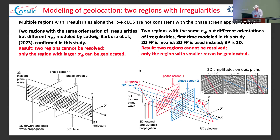Grayscale plots show amplitude distribution on the observational plane. We can see that if we have only the first or only the second phase screen, the distributions are one-dimensional, but after propagation through both screens the distribution becomes two-dimensional. So the result is that the two regions cannot be resolved, but only the region with the smaller scan angle alpha can be geolocated. The other cannot. In this case, the scan angle plays the same role as the magnitude of irregularities does for regions with aligned irregularities.